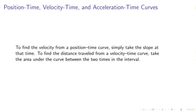Position time, velocity time, and acceleration time curves. To find the velocity from a position time curve, simply take a slope at that time. To find the distance traveled from a velocity time curve, take the area under the curve between the two times in the interval.